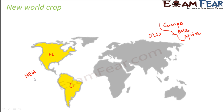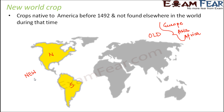So now can you guess what is a new world crop? Long ago, around 1492, there were certain crops found only in the new world. Crops native to America before 1492 and not found elsewhere in the world during that time are known as new world crops. However, as time passed, these crops were grown in all other parts of the world as well.